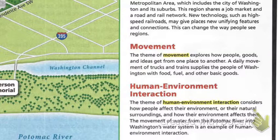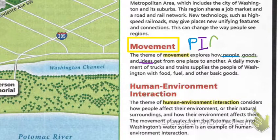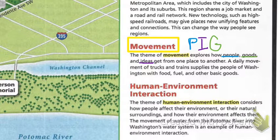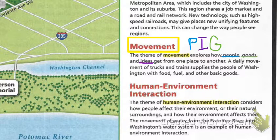First one up is movement. Movement's definition explains how people, goods, and ideas get from one place to another. I came up with a way to remember this — if I think of a pig, a pig is always moving, and how the pig gets around is what you're looking at. I rearranged the people, goods, and ideas to recreate the acronym for the word PIG: people, goods, and ideas.